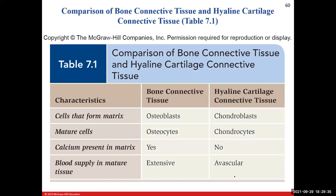Comparing bone and hyaline cartilage connective tissue: both have cells that form the matrix (named with '-blast' suffix) and cells that maintain it (named with '-cyte' suffix) — osteocytes for bone, chondrocytes for cartilage. Key difference: calcium is present in bone matrix but absent in hyaline cartilage matrix. Bone connective tissue is highly vascularized; mature hyaline cartilage is avascular. Commit that to memory.